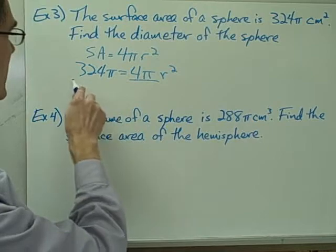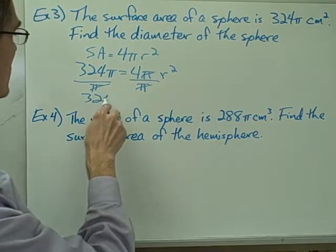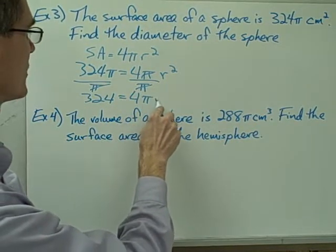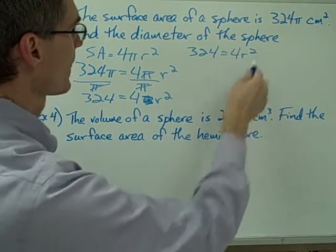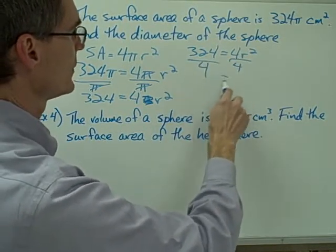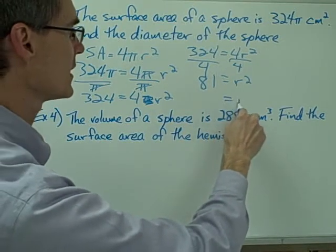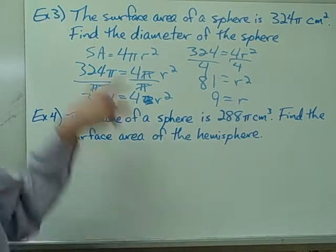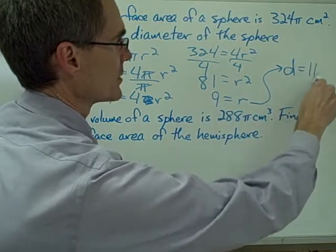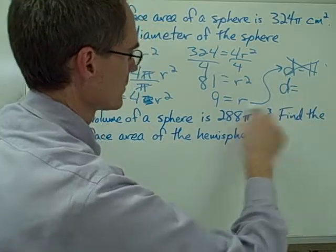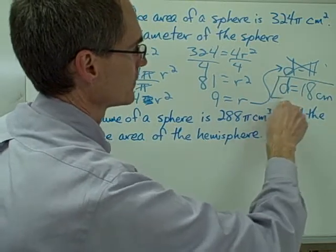So 324 pi equals 4 pi times the radius squared. If I divide each side by pi, that makes the pi's go away, and I've got 324 equals 4 r squared. If I divide both sides by 4, I get 81 equals r squared. Taking the square root of both sides, my radius is equal to 9. But I'm asked for the diameter, so the diameter equals 2 times 9, which is 18 centimeters.